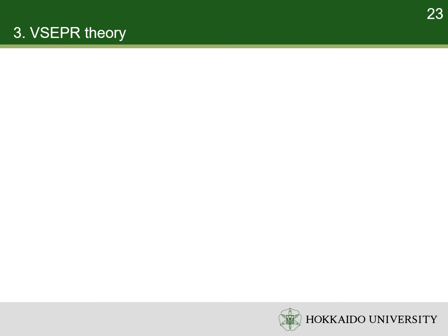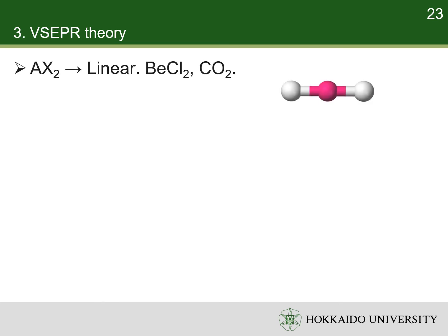Here I show you some shapes of typical molecules based on VSEPR theory. An AX2 molecule has two ligands and no lone pairs, that is, two electron pairs. The biggest angle between them is 180 degrees, so an AX2 molecule has a linear shape. Typical examples of AX2 molecules are beryllium chloride and carbon dioxide.